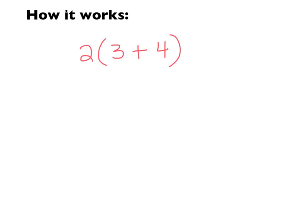Here's an example: we have the problem 2 times (3 plus 4). Whenever a number is right next to a set of parentheses, that means times. The number on the outside tells us how many groups we're working with — so this means 2 groups of whatever's inside, which is 2 groups of 3 plus 4. I'm going to draw it with integer chips: here's a group of 3, plus a group of 4.